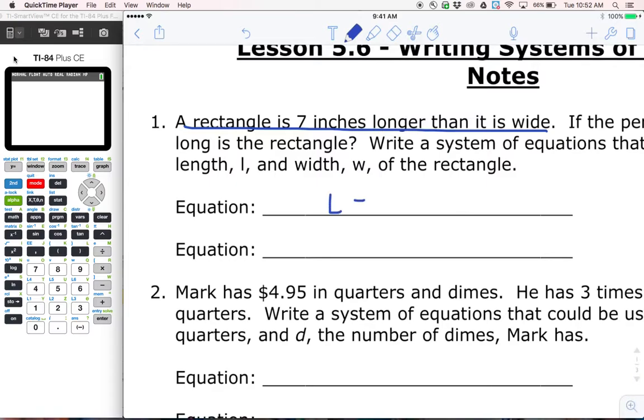So I'm going to say L equals. Now, I don't know the width. But I know that whatever the width is, if I add seven to it, that's going to be the length. Alright, the length is seven inches more than the width. It's seven inches longer than it is wide. So here's my equation that represents that first sentence. Do you notice how an equation has an equal sign? And I got my L and my W.